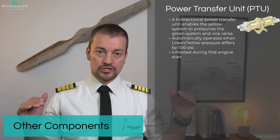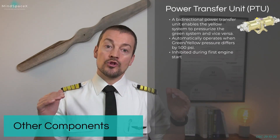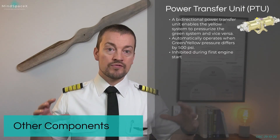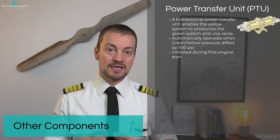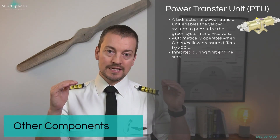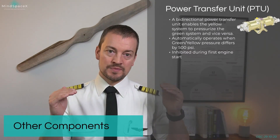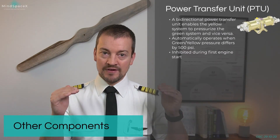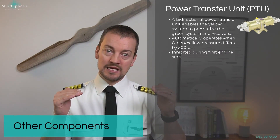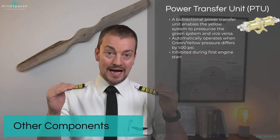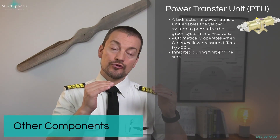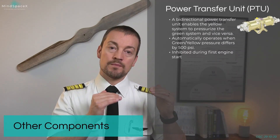Remember, the normal operating pressure for all three systems was 3000 psi individually. If the pressure in the green or the yellow system on either side of the PTU differs by more than 500 psi, then the PTU will automatically use the higher pressure system to try to pressurize and bring the lower system's pressure up.